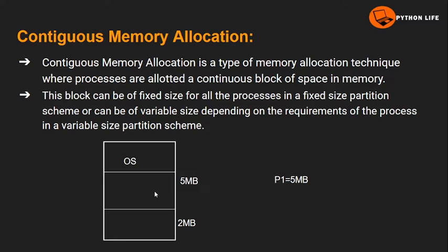The P1 process of 5MB size is stored in the first partition as a continuous block of memory. This is called contiguous memory allocation. It has two types: fixed size partition and variable size partition.